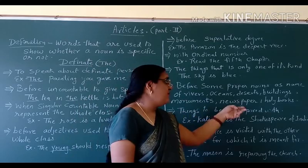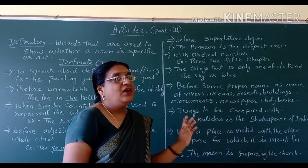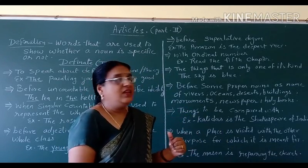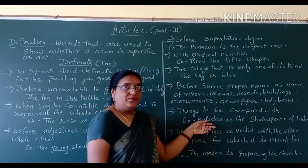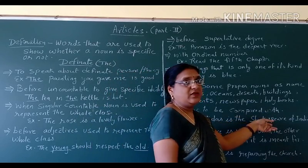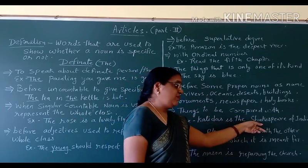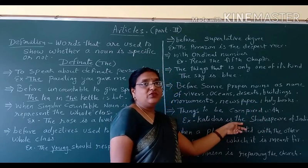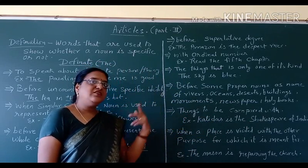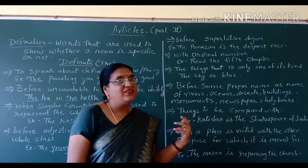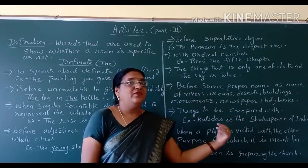We use the definite article when things are to be compared. We are not using it with comparative degree in general, but if a noun is compared with another noun, then we use the definite article. Example: 'Kalidas is the Shakespeare of India.' We are talking about Kalidas and comparing him with Shakespeare, so before Shakespeare we use 'the.' Another example: 'Kashmir is the Switzerland of India.' We are comparing Kashmir with Switzerland, so we use 'the' before Switzerland.